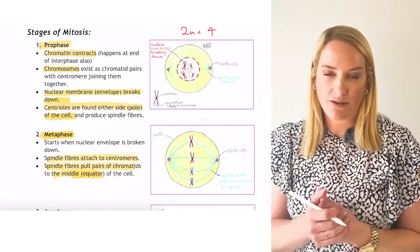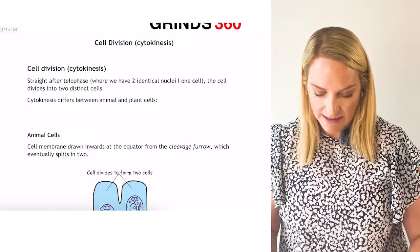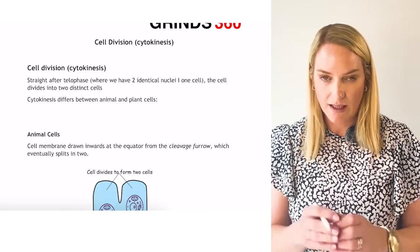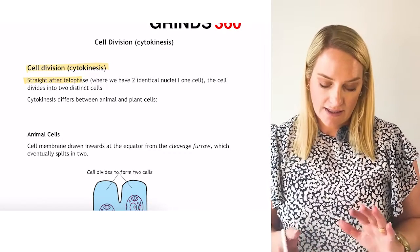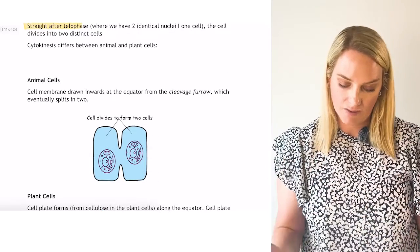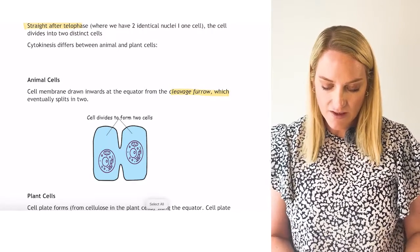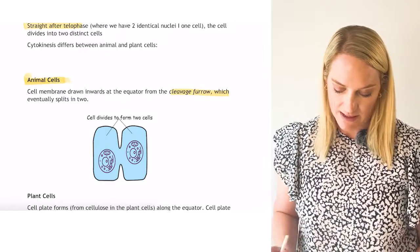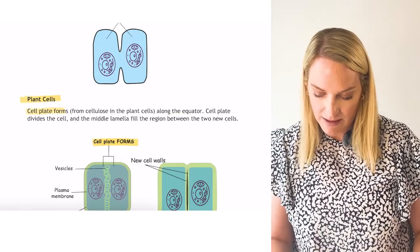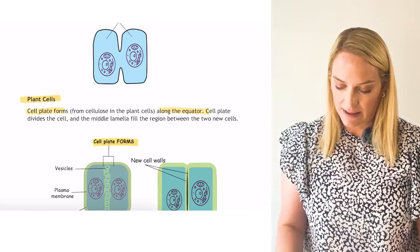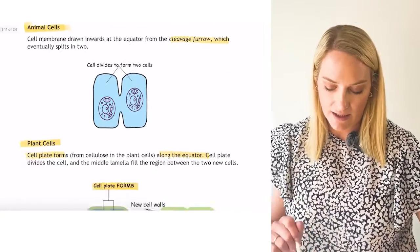After telophase, cytokinesis occurs — the two cells separate. In animal cells, a cleavage furrow forms before the cell splits. In plant cells, a cell plate forms along the equator and we have the middle lamella. You need to know what happens after telophase in both animal cells and plant cells.